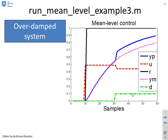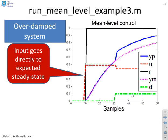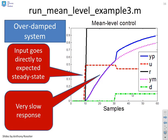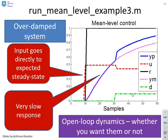So you see, again, the input's gone directly to the steady state. That's what you wanted. But you've got a very slow response. So whether you wanted a slow response or not, because you've done mean level, you've got open-loop dynamics, and that's what you're going to get.